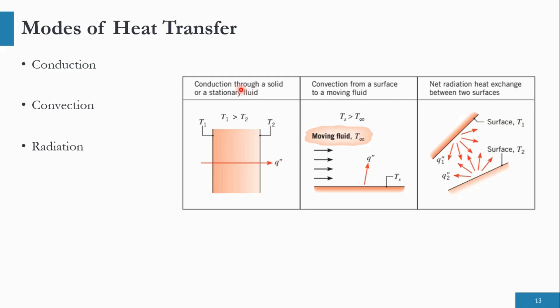It should be noted that conduction takes place through a solid or a stationary fluid. For example, if there are two blocks at different temperatures with a gas between them, the gas should be considered as a stationary fluid — meaning there is no macroscopic or bulk movement in the system. There will always be microscopic motion, but we will discuss that in the detailed part.